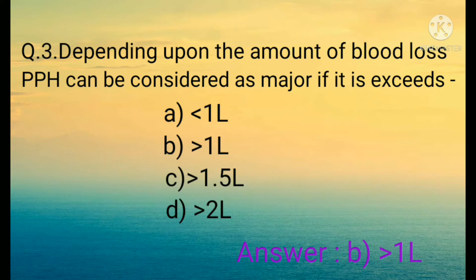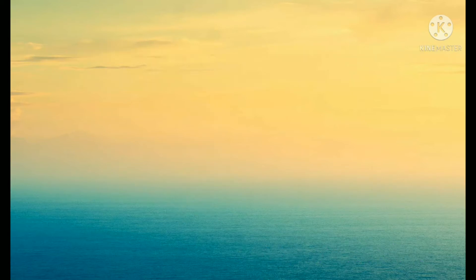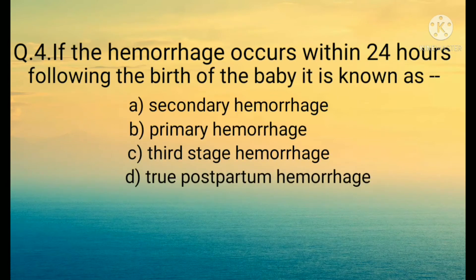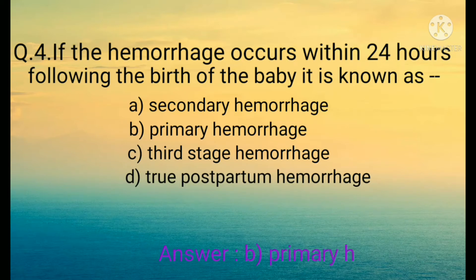Question number four: If the hemorrhage occurs within 24 hours following the birth of the baby, it is known as: A) Secondary hemorrhage, B) Primary hemorrhage, C) Third stress hemorrhage, D) True postpartum hemorrhage. The correct option is B) Primary hemorrhage.